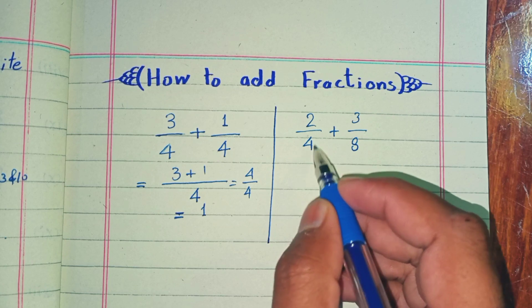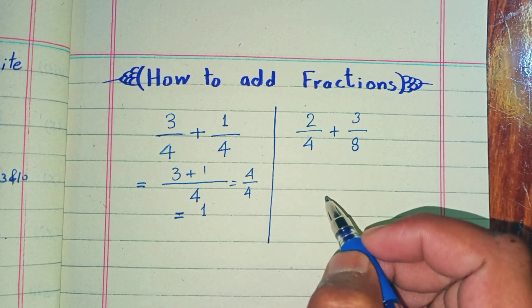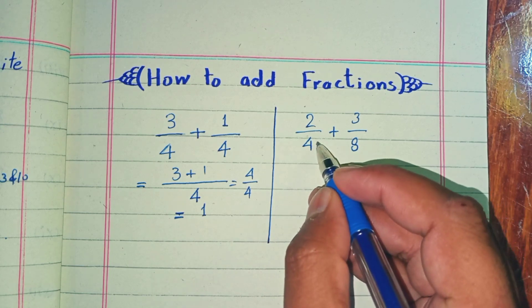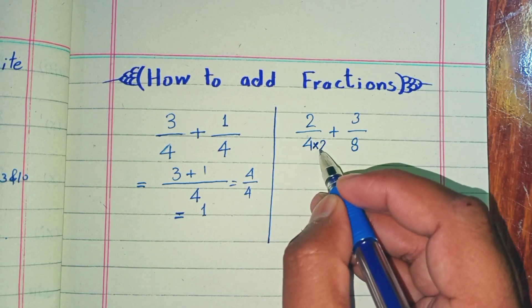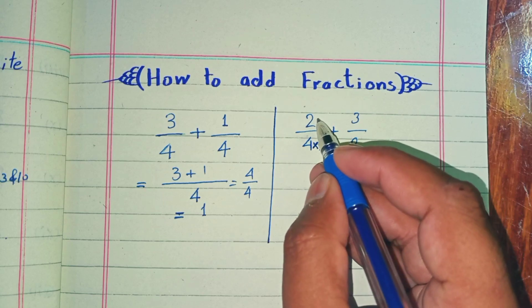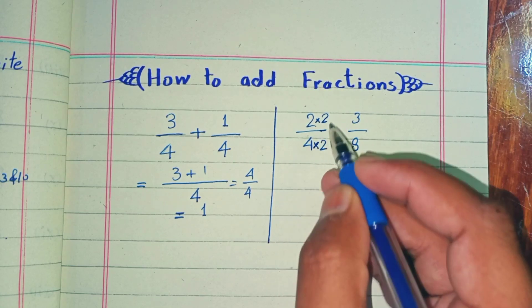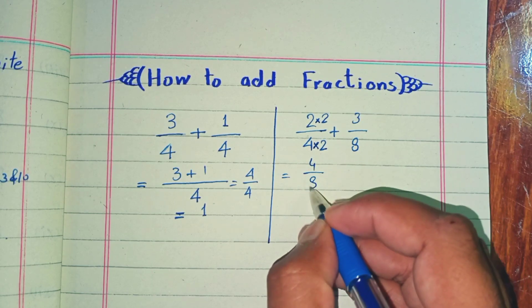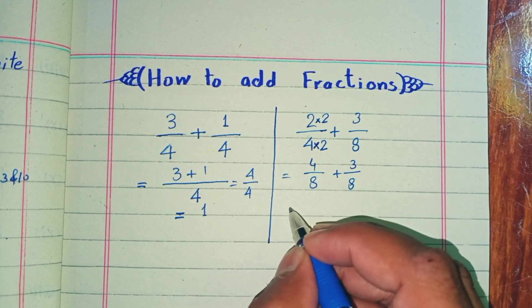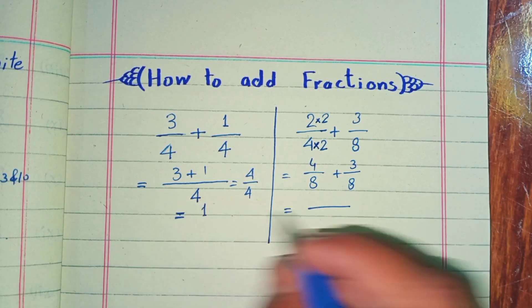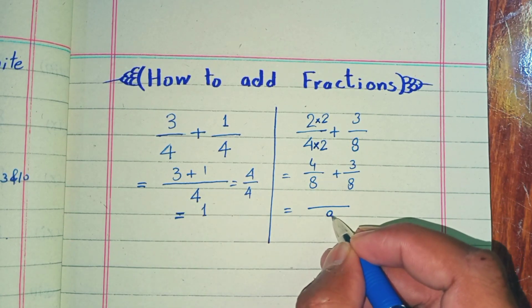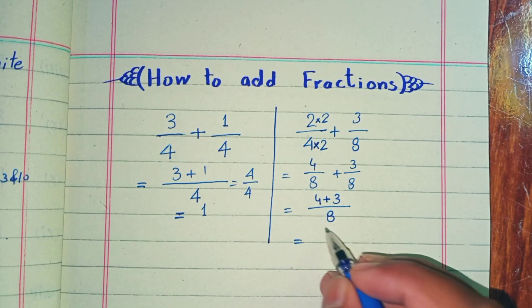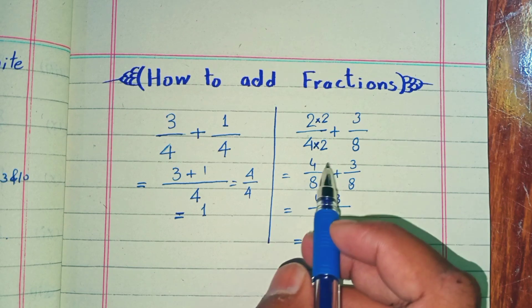How can we make 4 equal to 8? We multiply by 2. When we multiply the denominator by 2, we have to multiply the numerator to balance the fraction. So we get 4/8 plus 3/8. Using the same method, we have 8 as the denominator and we add the numerators, so we get the answer: 7/8.